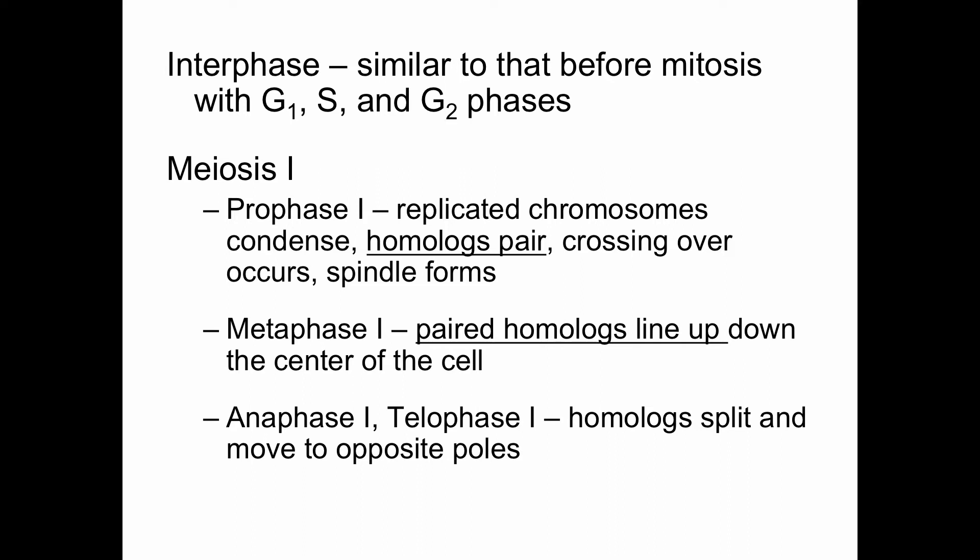Interphase is not part of the division cycle — it's where the cell does its normal job. During G1 the cell functions, then in the S phase everything duplicates, then G2 wraps it up and makes sure everything replicated correctly with enough energy to divide. Then, if it's meiosis, we start with meiosis one. Prophase one of meiosis one is going to look a lot like prophase of mitosis, except for some specific differences I'll point out.